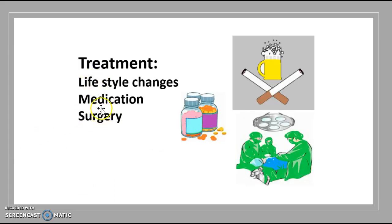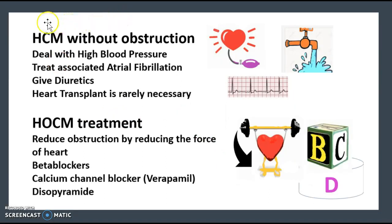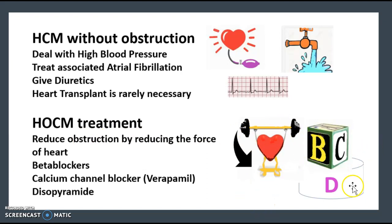For treatment, the options are quite simple. The main one is lifestyle changes — cutting out drinking or smoking, and adopting a healthier lifestyle in terms of food and stress levels. There are also certain medications and surgery. For HCM without obstruction, you want to treat high blood pressure, treat associated atrial fibrillation, give diuretics, and in very rare cases, a heart transplant. For HCM with obstruction, you want to reduce obstruction by reducing the force of the heart, using what I call BCD: beta blockers, calcium channel blockers such as verapamil, or disopyramide.